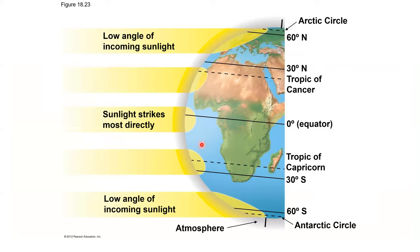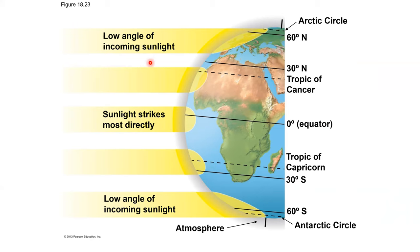At the equator, sunlight strikes more directly. Further from the equator toward both north and south poles, we decrease the angle of incoming sunlight. The way sunlight strikes the Earth affects temperature in that area, so moving further from the equator we see a decrease in temperature, related to how sunlight strikes the Earth.